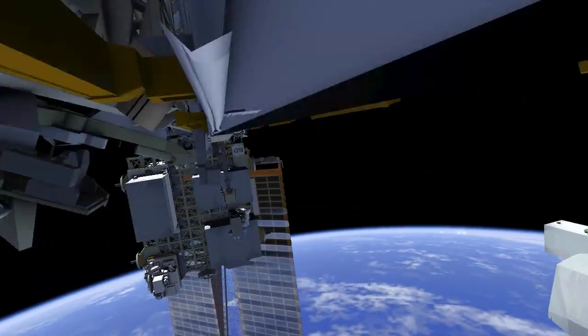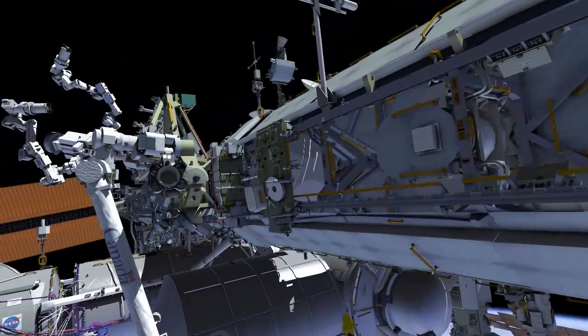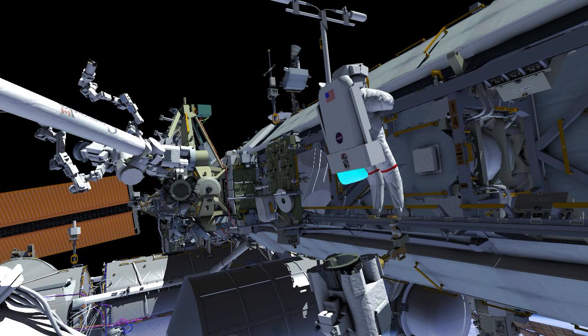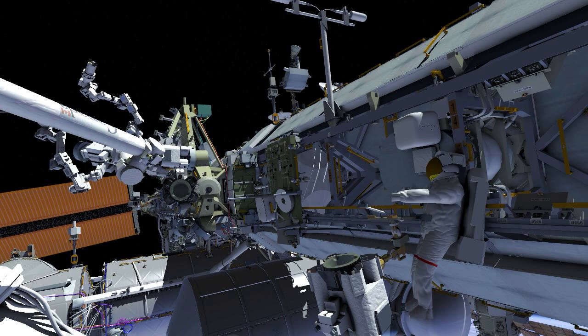EV1 is then returned to the forward phase of the space station, egresses the robotic arm, and returns the foot restraint to the port cart.